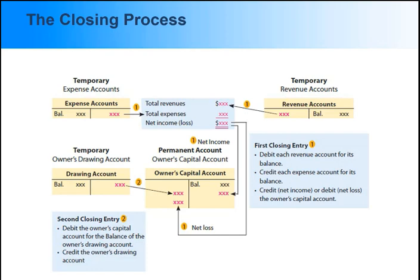First, debit each revenue account and credit each expense account for its balance. Then, credit net income or debit net loss to the owner's capital account. Second, debit the owner's capital account for the balance of the owner's drawing account and credit the owner's drawing account.